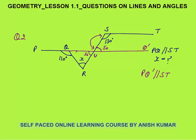Now this angle — on a straight line the full angle is 180 degrees, so this would be 70. Now what will be the value of angle X? You know that XRU is a triangle, and the sum of all angles in a triangle is 180 degrees.